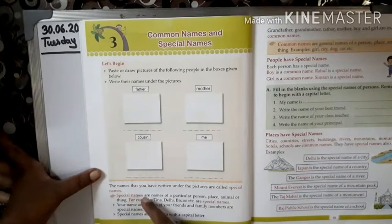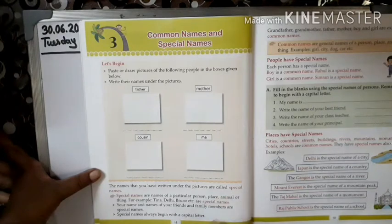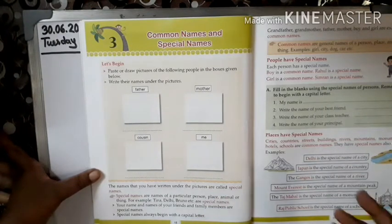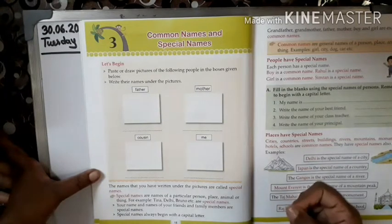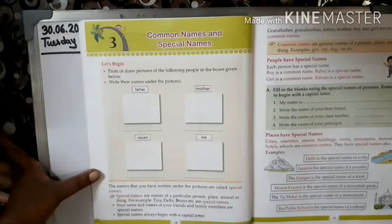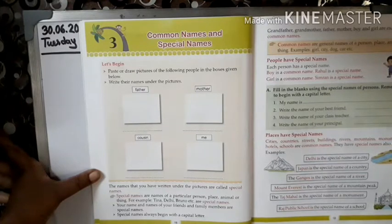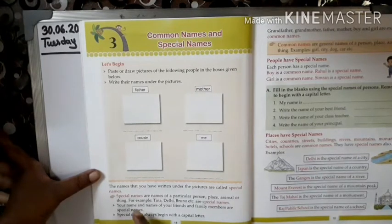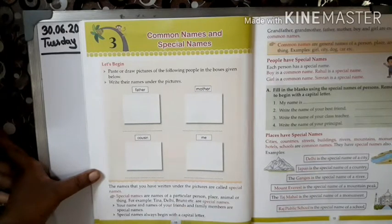The names that you have written under the pictures are called special names. Special names are names of a particular person, place, animals, or things. For example, Tina, Delhi, Bruno, etc. are special names.